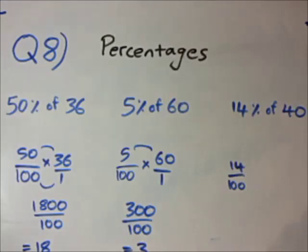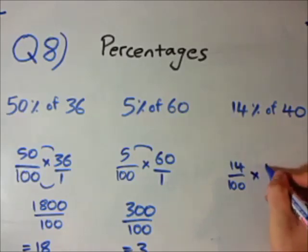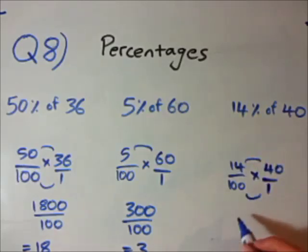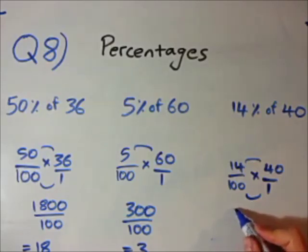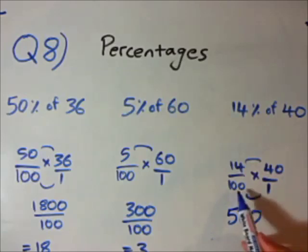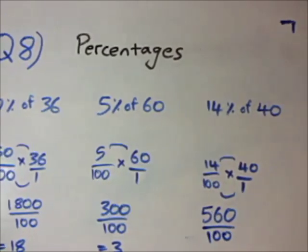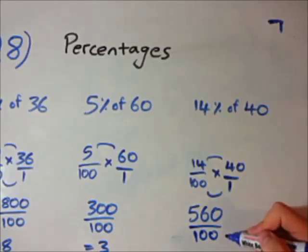Third one now, 14% of 40. So, I've already got my fraction for the percentage. I'm going to times it by 40 over 1. Now, I'm going to times the top line, I'm going to times the bottom line. So, 14 times 40, that is equal to, in my head, I've got pretty good multiplication skills, it's going to be 560. Now, 100 times 1 is 100. Now, we're nearly there. What's 560 divided by 100?